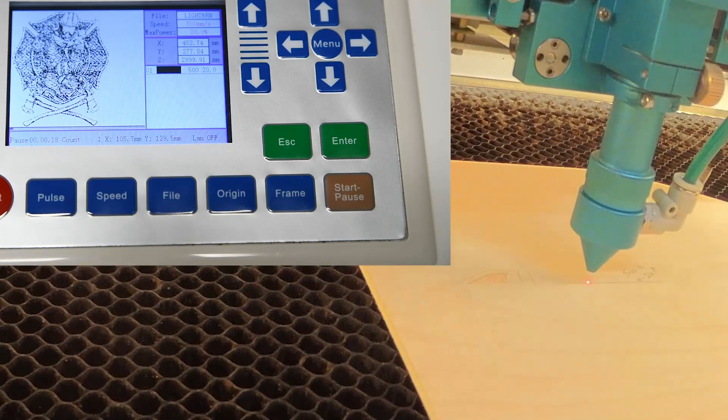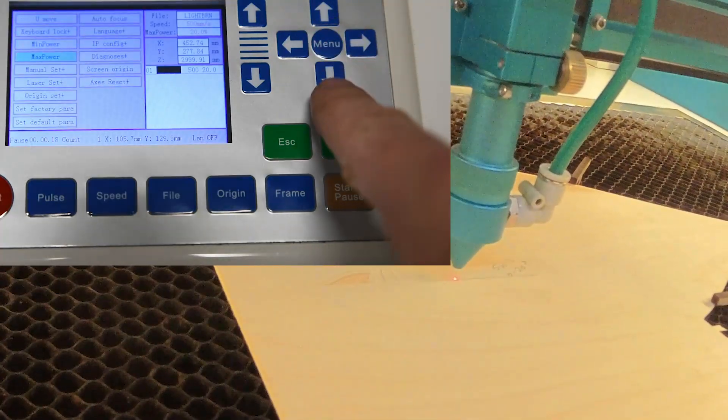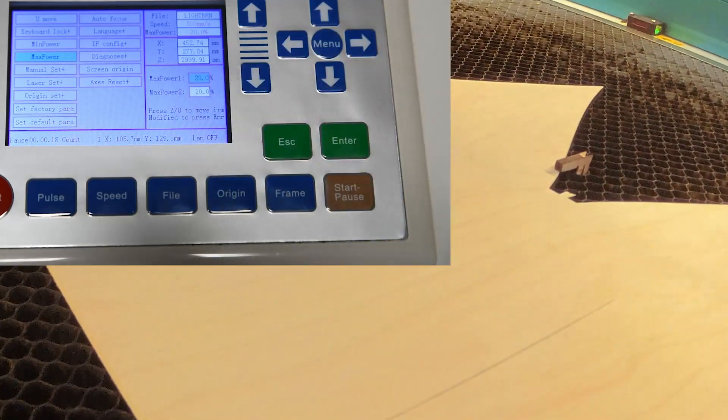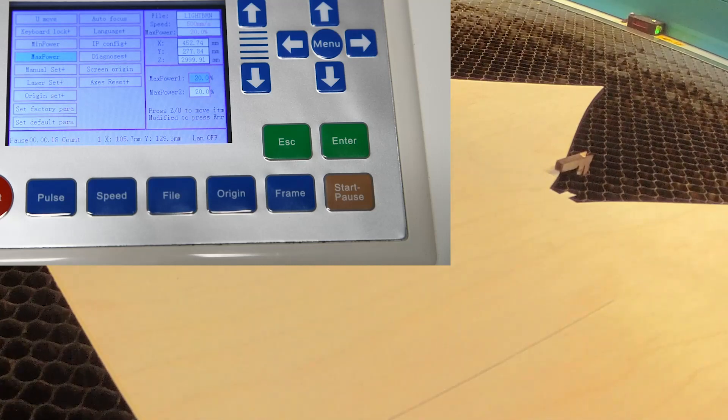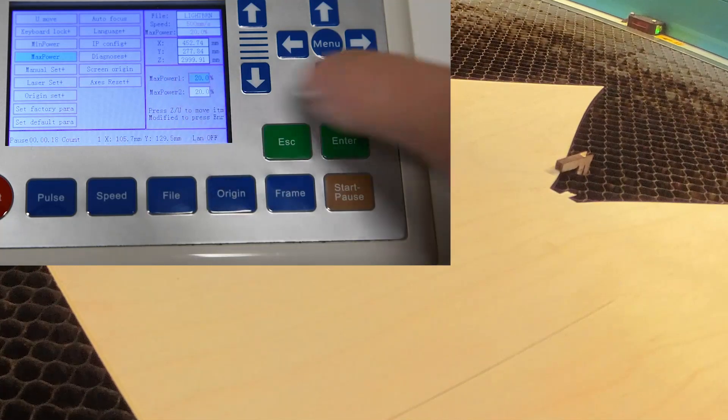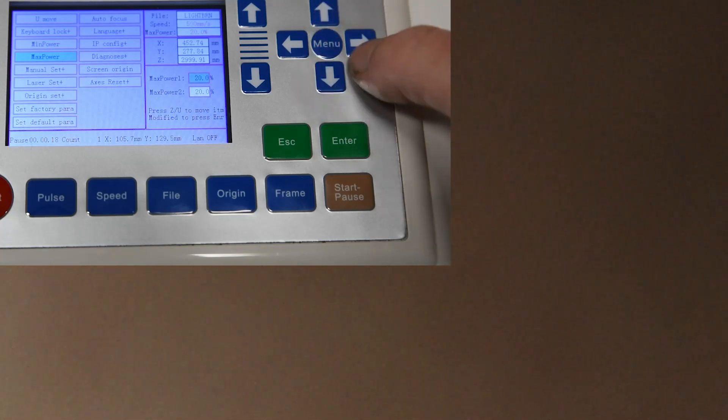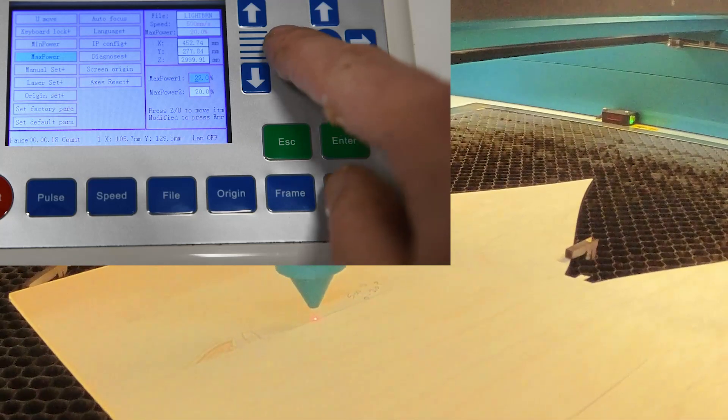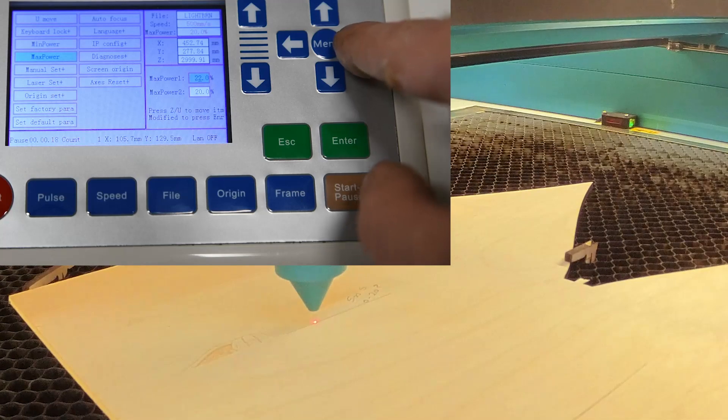To change your power setting, you want to press the menu button, go down to maximum power. In this case, you'll see it's 20 maximum power at the moment, and I'm going to turn that up to 25 to see the difference. To do that, you just want to use the arrow keys. The left and right arrow key will move the little cursor along. The up and down arrow key you change the numbers.